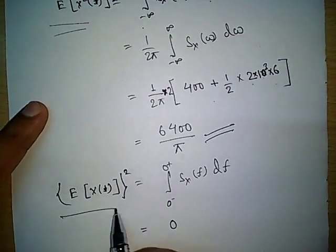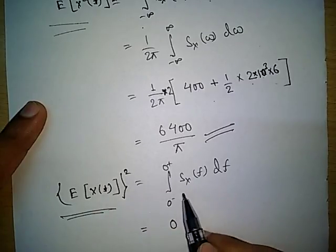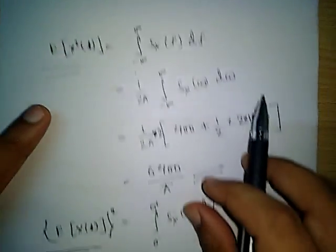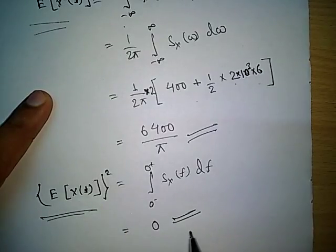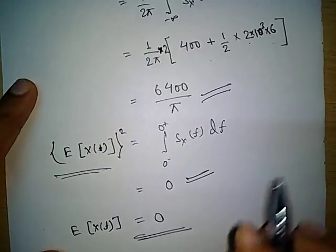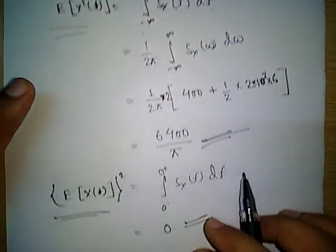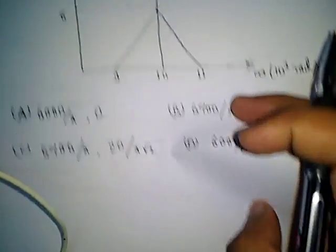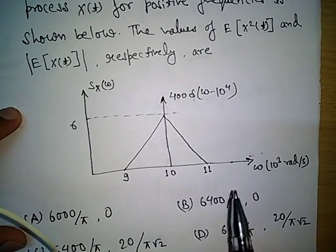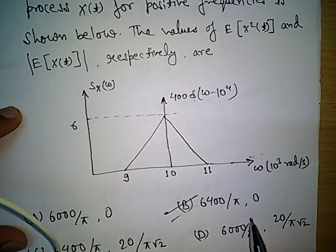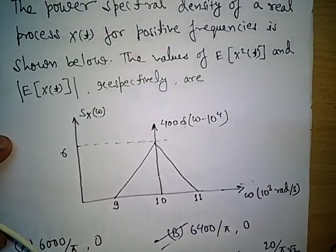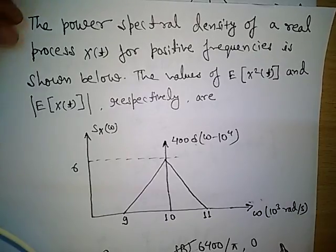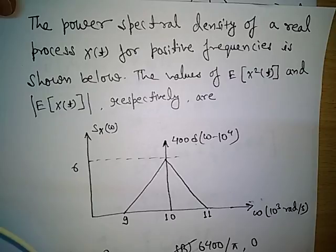Next we find the DC power, E[x(t)]², by integrating from 0⁻ to 0⁺. From the graph we can see there is no function at zero frequency, so the DC power is zero, which means E[x(t)] = 0. So the final results are: E[x²(t)] = 6400/π and E[x(t)] = 0. Checking the answer options, option B — 6400/π, 0 — is correct. Using the properties discussed, this type of power spectral density problem can be solved easily. Thank you for watching.